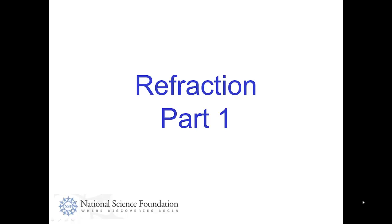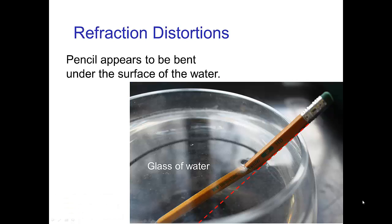Refraction Part 1. I suggest that you go to the kitchen, pour yourself a glass of water and take a pencil and take a look at what the pencil looks like when you dip it in the water — or a knife or something straight. You'll see that underwater the pencil appears as if it's bent, as you see in this photo. There's clearly some kind of distortion in the optics due to the fact that you're seeing part of the pencil in the air and part of the pencil underwater.